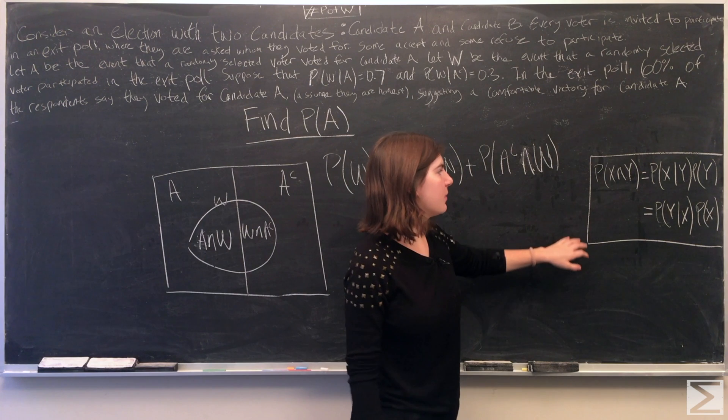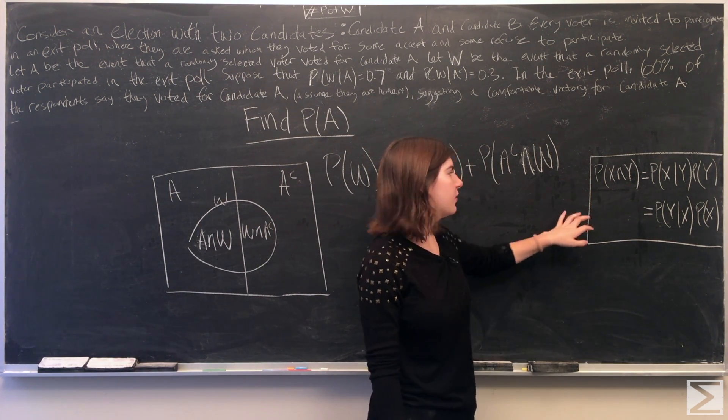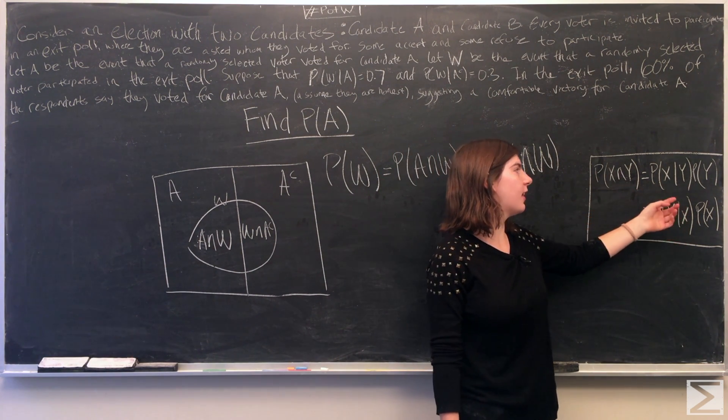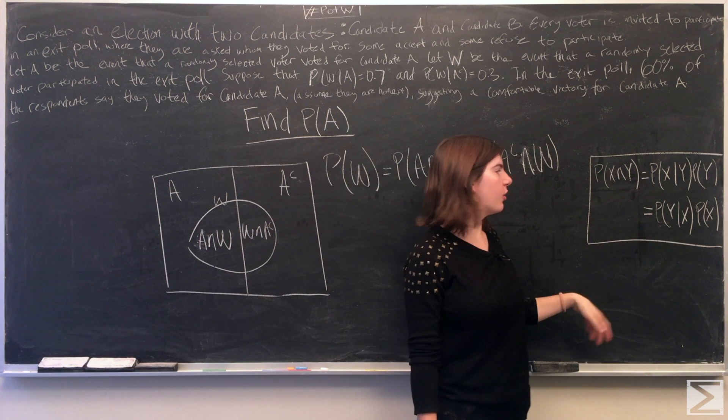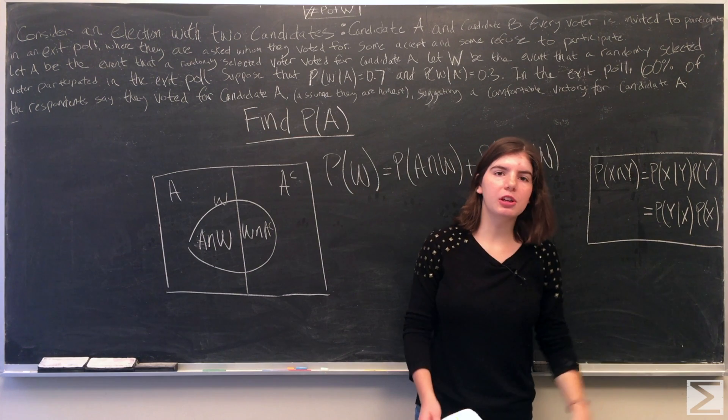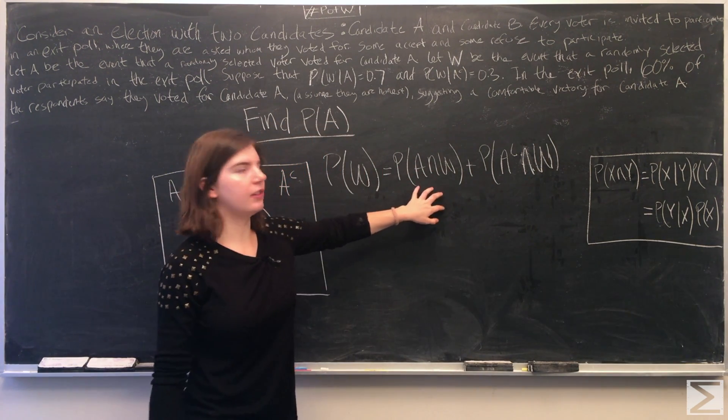If you remember, if you have two events, X and Y, their intersection is equal to the probability of X given Y times the probability of Y or the probability of Y given X times the probability of X. And we can use this rule to rewrite these intersections.